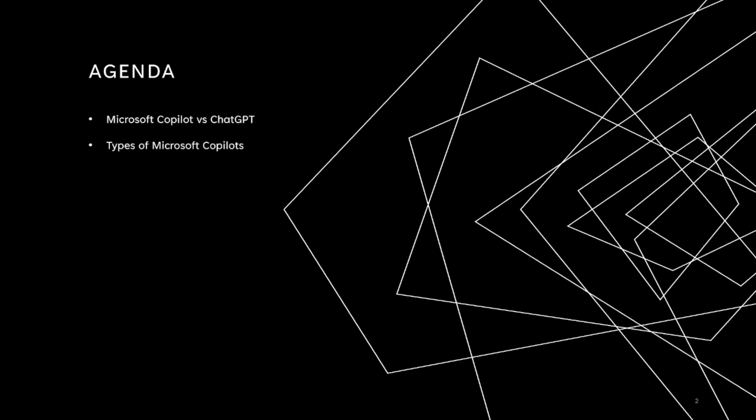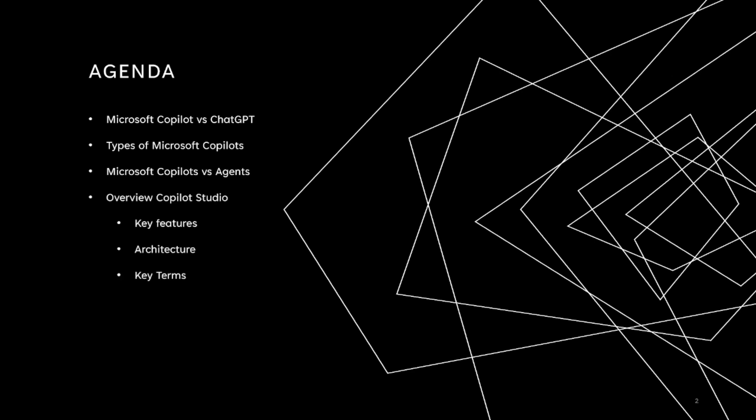Agenda. We'll discuss the differences between Co-Pilot and ChatGPT, what are the different types of Co-Pilots, the difference between Microsoft Co-Pilots and AI agents you can create in the Microsoft ecosystem, overview of the Co-Pilot Studio, key features, architecture, and key terms. We'll follow up with a demo — we'll quickly create an agent and test that agent.